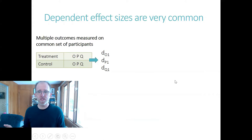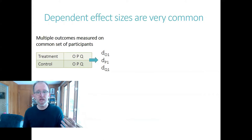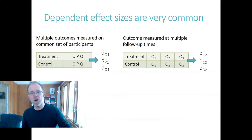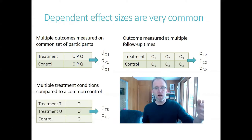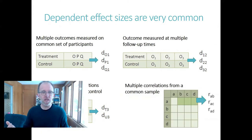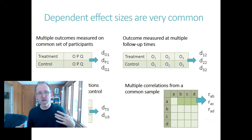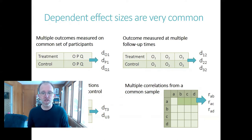If you're conducting a research synthesis, it is exceedingly common to encounter studies that provide multiple dependent effect size estimates. This might come from having multiple outcomes measured on a common set of participants, from having one outcome measured at multiple follow-up times, a study with multiple treatment conditions compared to a common control condition, or if you're interested in using multiple correlations that are all drawn from a common sample. If you've ever extracted data or been involved in the analysis of a large-scale systematic review, you've probably encountered scenarios like this.